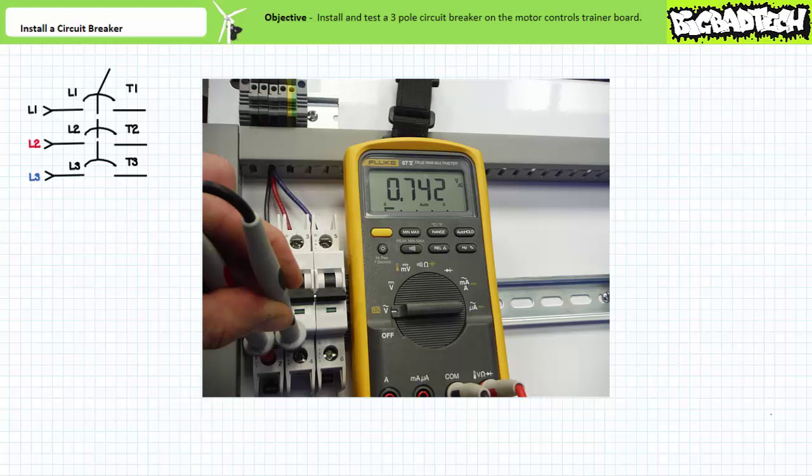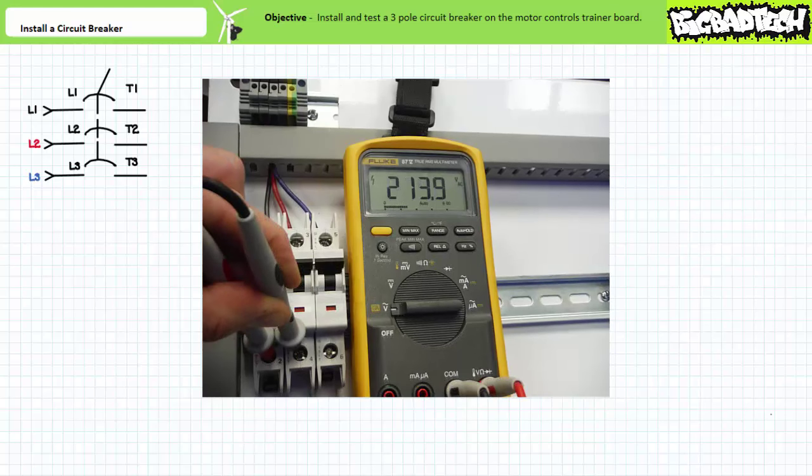Note the DMM is reading 0.742 volts, essentially zero volts. When the circuit breaker is closed the DMM indicates the bottom of the closed circuit breaker is hot as expected. That's the point. The circuit breaker can make or break connection to a circuit based upon its actuation state.